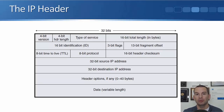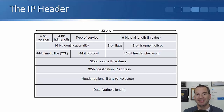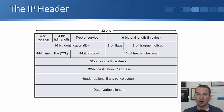The 8-bit protocol field specifies the layer 4 information type — typically TCP or UDP. We then have a checksum used to verify the packet has not been corrupted in transit. Next are the source IP address, specifying where the packet came from, and the destination IP address, specifying where it's going. The header options field allows additional information to be included, though it's not commonly used. Finally, we have the data — the rest of the packet.